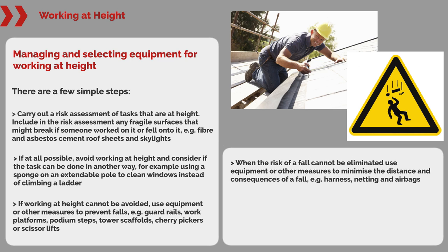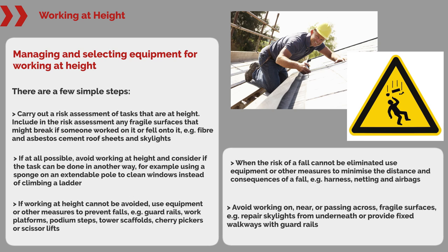When the risk of a fall cannot be eliminated, use equipment or other measures to minimise the distance and consequences of a fall — for example, harness, netting and airbags. Avoid working on, near or passing across fragile surfaces. For example, repair skylights from underneath or provide fixed walkways with guardrails.